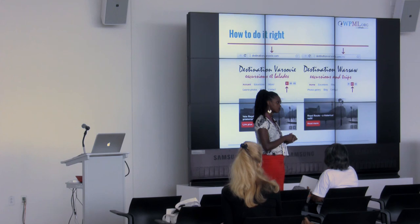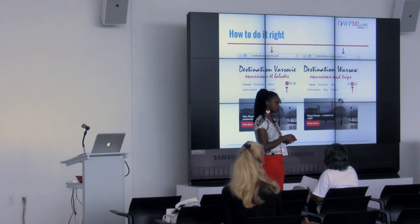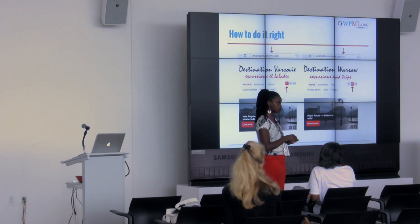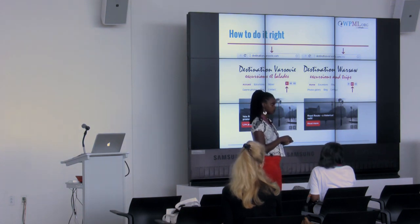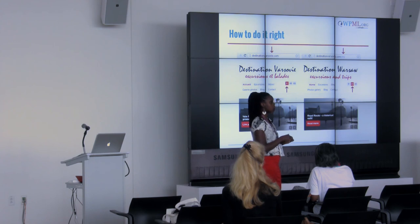An audience member asks: when you have a subdomain pointing to a country, is that because the language of that country is different, or because the business features of that country are different? And there's a concern about whether customers need to know the different domain paths. The answer is: with a relational multilingual website, the customer only comes to your central domain and is directed from there — either automatically based on their location, or by clicking a flag. So there's no need for the user to know all the separate domain addresses.